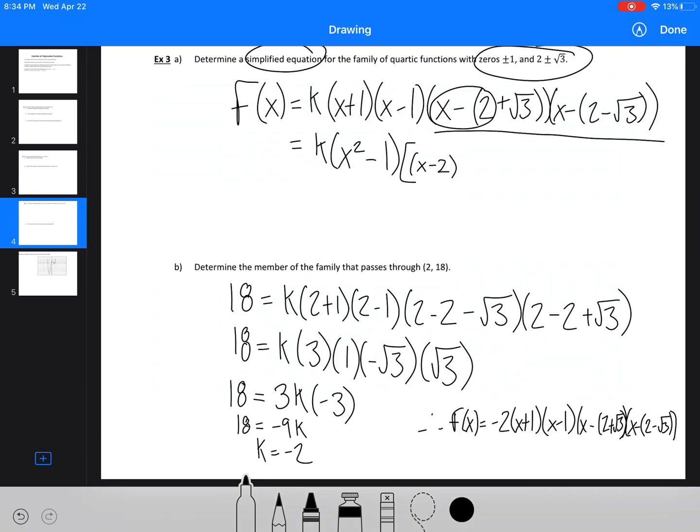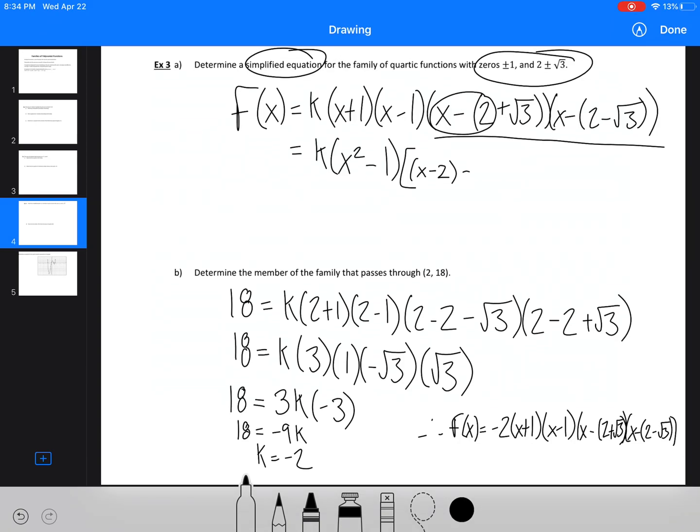We've got (x minus 2), and then that negative will go to the negative, the root 3 as well. So we've got that, and then we're going to just make that a square bracket. We'll do the same thing here, (x minus 2), and then that's going to be plus root 3.